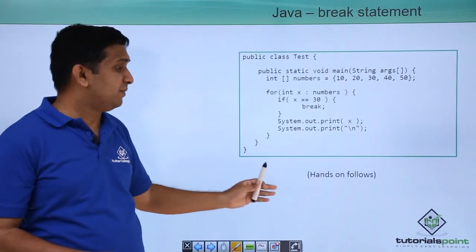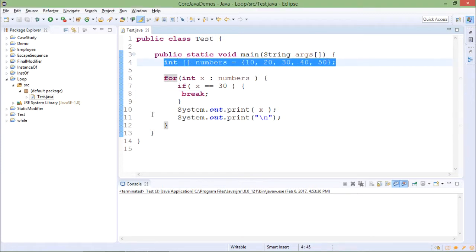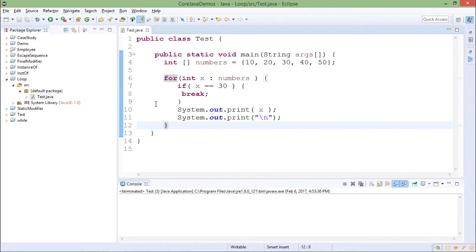So let's implement this practically. This is the code for break statement. One array is given which is an integer array with values 10, 20, 30, 40, 50. Then enhanced for loop is used to print the array elements.